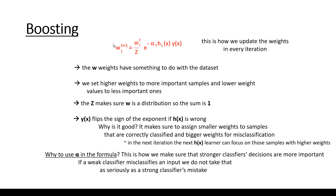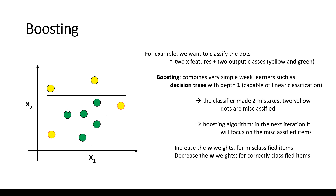The weight update formula is: the weight in the next iteration equals the weight in the previous iteration divided by Z, times an exponential function — e to the power of minus alpha times h(x) times y. We set higher weights to more important samples and lower weights to less important ones. If we have a weak learner with some misclassified samples, in the next iteration we want to focus on the misclassified items. So we decrease the weights for correctly classified items and increase the weights for misclassified items. This is how the algorithm knows which values to focus on in the next iteration.